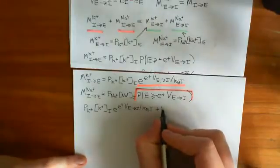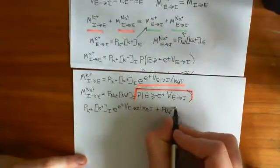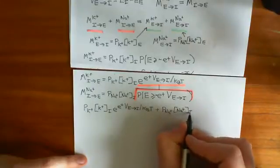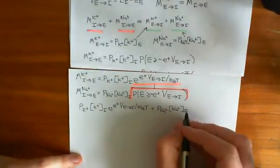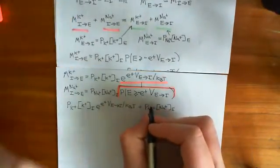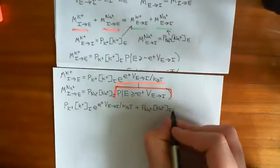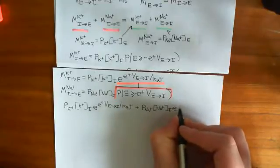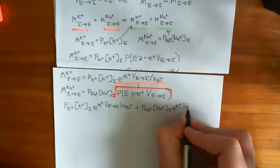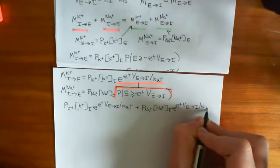We add on the movement of sodium from intracellular to extracellular: the permeability of the semipermeable membrane to sodium, times the sodium concentration intracellularly, times the probability that the energy is greater than or equal to the value needed for those ions to cross the membrane at a certain voltage.